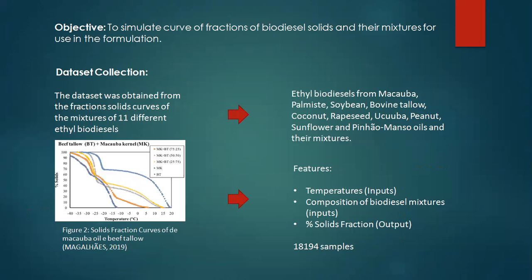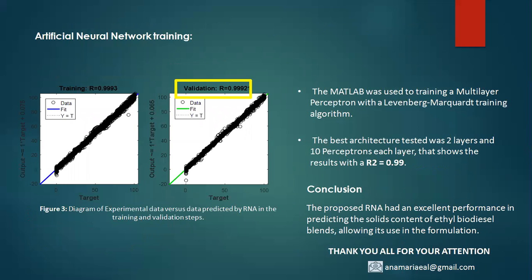In this study, the dataset to train the artificial neural networks was obtained from the solid fraction curves of the mixtures. Different compositions were composed of 11 different feedstocks, and the dataset consisted of 11,194 samples. The output of the model is the fraction of solids in the mixture, given the composition of biodiesel mixtures and temperature as input. MATLAB was used to train a multi-layer perceptron with the Levenberg-Marquardt algorithm.